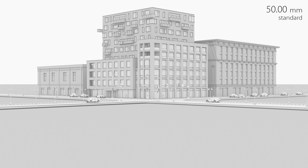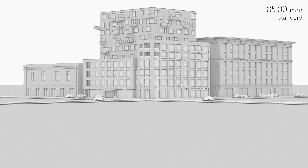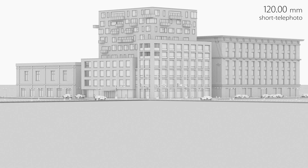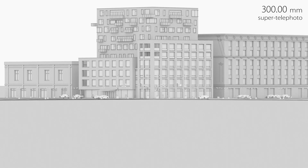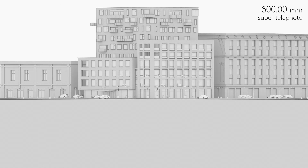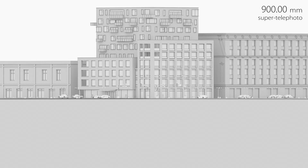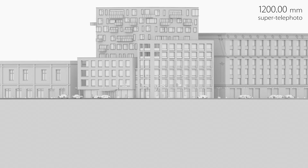Next we have a 50mm lens, which is closer to what the human eye sees — notice how far away we are from the subject. We also have an 85mm lens, and then telephoto lenses: a 120mm short telephoto and a 300mm super telephoto. As we increase the focal length to 600mm, then 900mm, and finally 1200mm, we get to the point where we can almost mimic an orthographic view, which has equal foreshortening in all three axes.